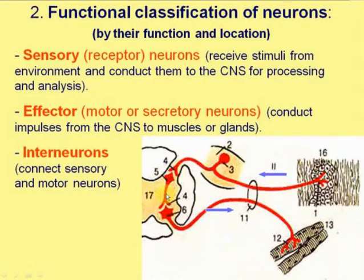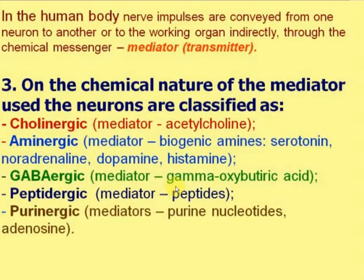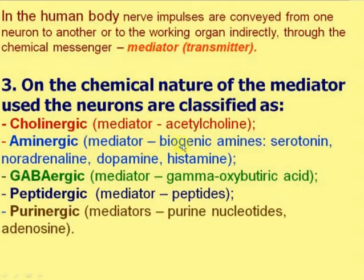Interneurons are the most numerous type of neuron in the human body. In the human body, nerve impulses are conveyed from one neuron to another or to the working organ indirectly through a chemical messenger called a mediator or transmitter. Based on the chemical nature of the mediator used, neurons are classified as cholinergic if the mediator is acetylcholine, or aminergic if the mediator is a biogenic amine like serotonin, noradrenaline, dopamine, or histamine.